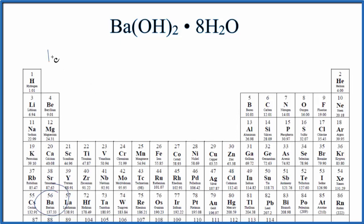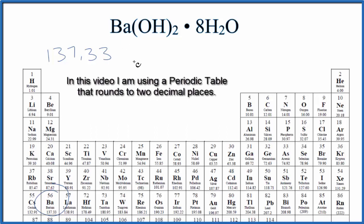Barium is 137.33 grams per mole. I won't write grams per mole each time. Let's add that at the end.